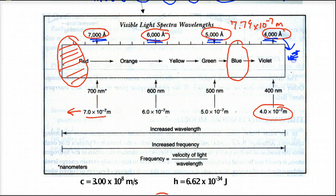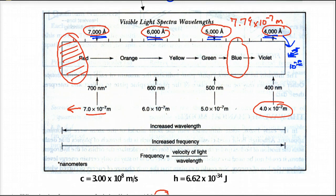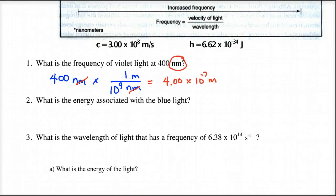So in any case, away we go. We have our meters which is our lambda. And here we go. C equals lambda times V. We're solving for frequency. So V is equal to C over lambda.